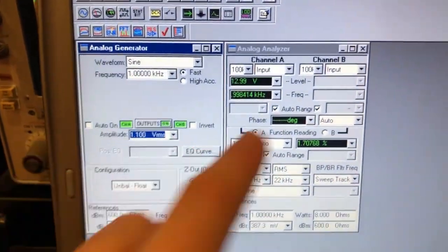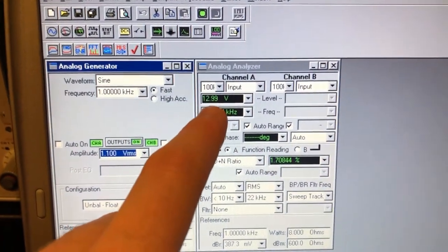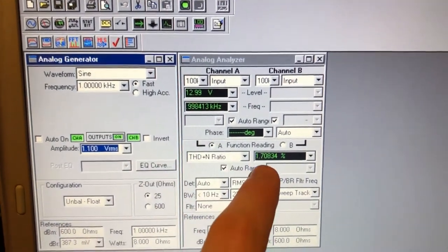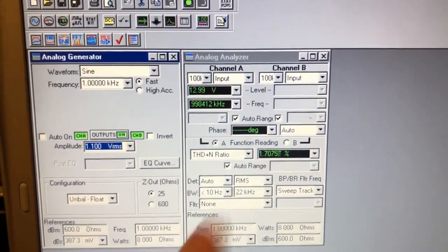So 1.1 volt RMS input. Our output voltage is now 12.99 volts. Our harmonic distortion is 1.7%.